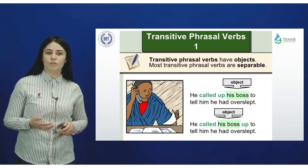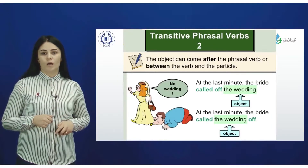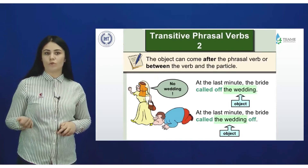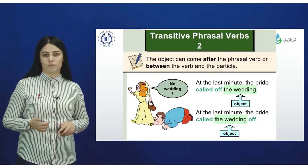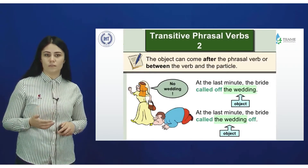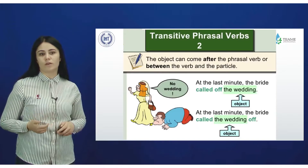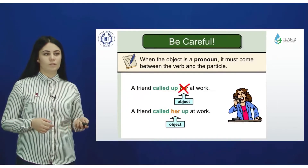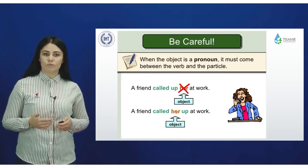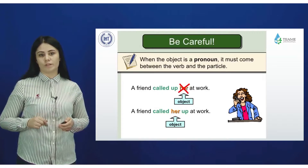For example: 'He called up his boss to tell him he had overslept' or 'He called his boss up to tell him he had overslept' — both are possible. The object can come after the phrasal verb or between the verb and the particle. Similarly: 'The bride called off the wedding' or 'The bride called the wedding off' — both are possible.